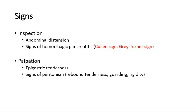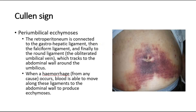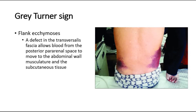On inspection, we should take note of any abdominal distension, and also look out for signs of hemorrhagic pancreatitis like Cullen's sign and Grey-Turner sign. On palpation, we expect to find epigastric tenderness, and also look out for signs of peritonism such as rebound tenderness, guarding, and rigidity. Cullen's sign is peri-umbilical ecchymosis, whereas Grey-Turner sign is flank ecchymosis.